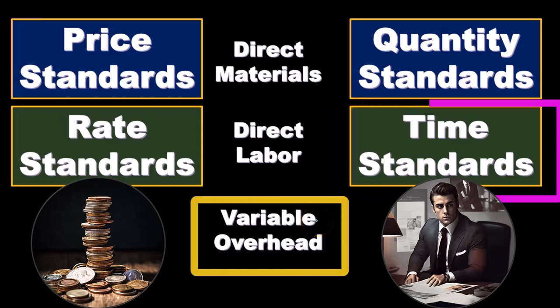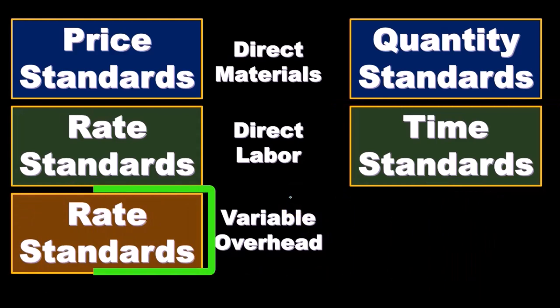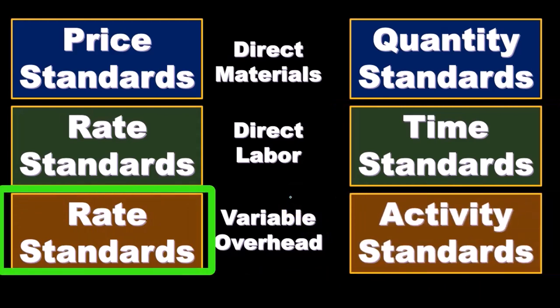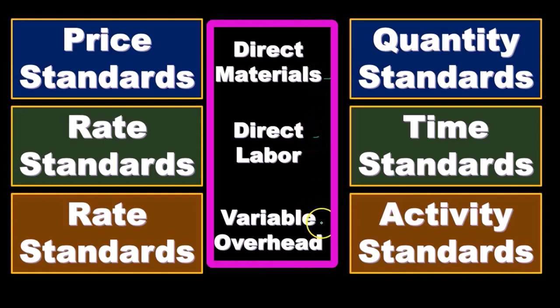The variable overhead has a similar condition — we have the rate standards versus the activity standards. We can take these component parts that appear on the budgeted financial statements and further break them down. We'll use these tools to do so.